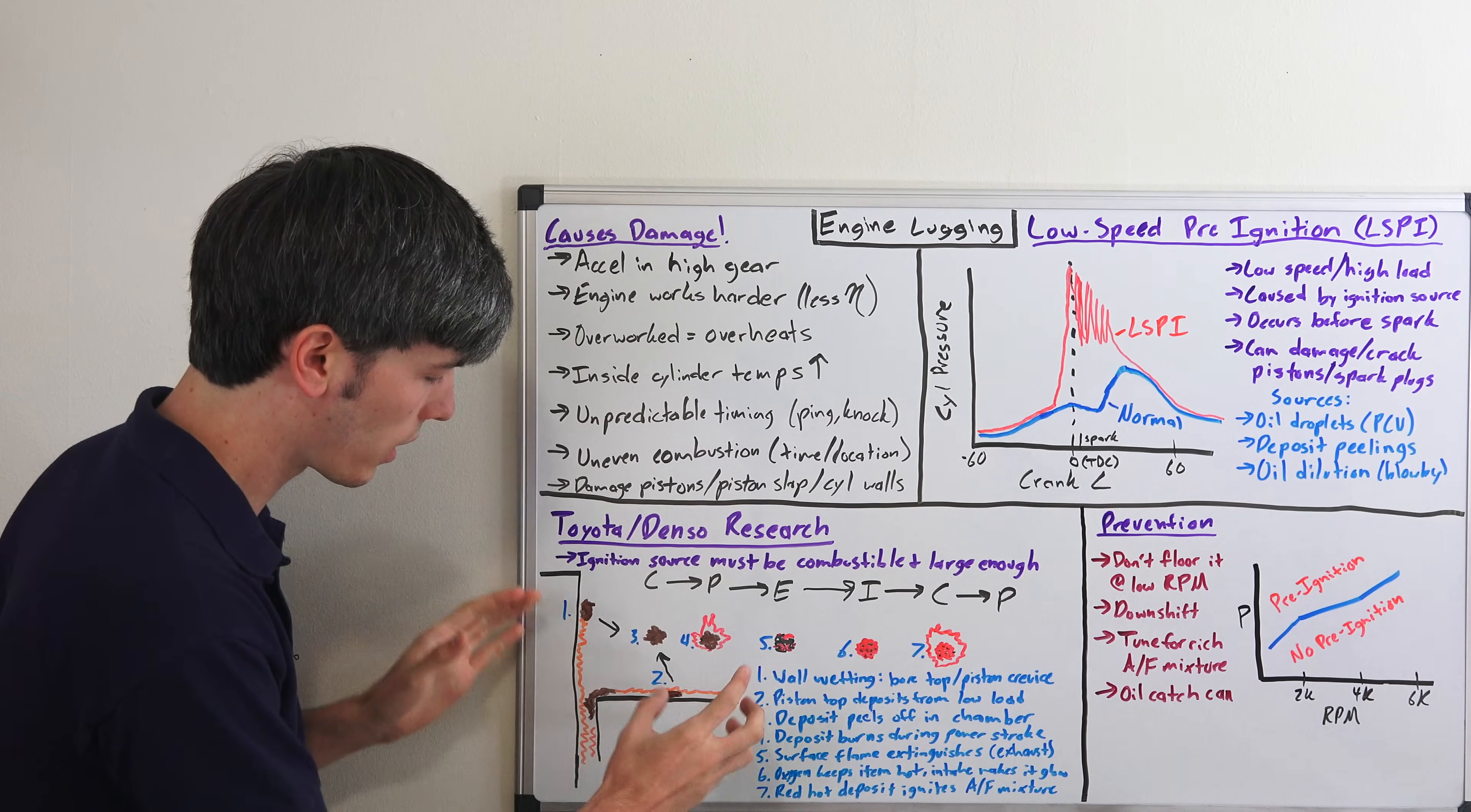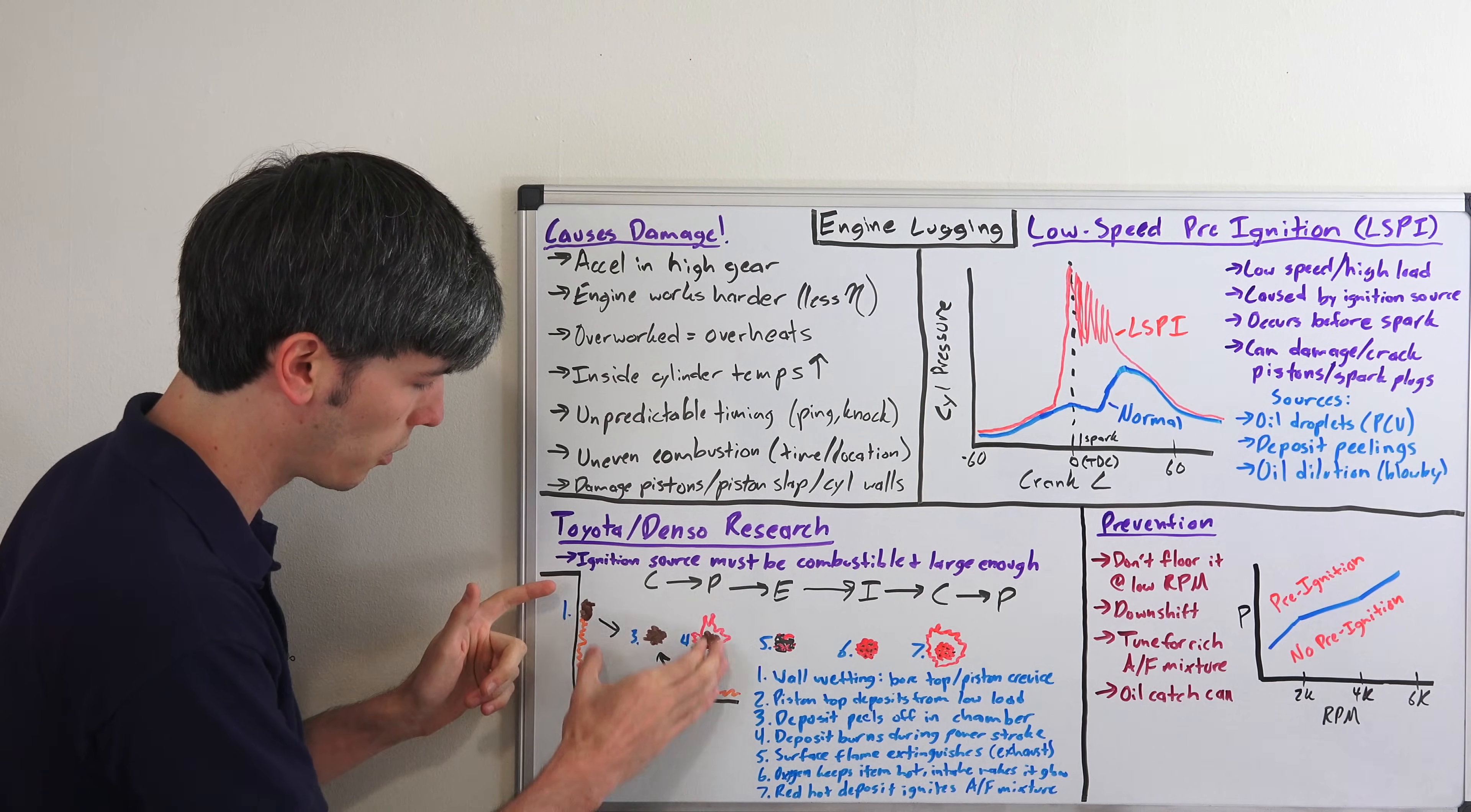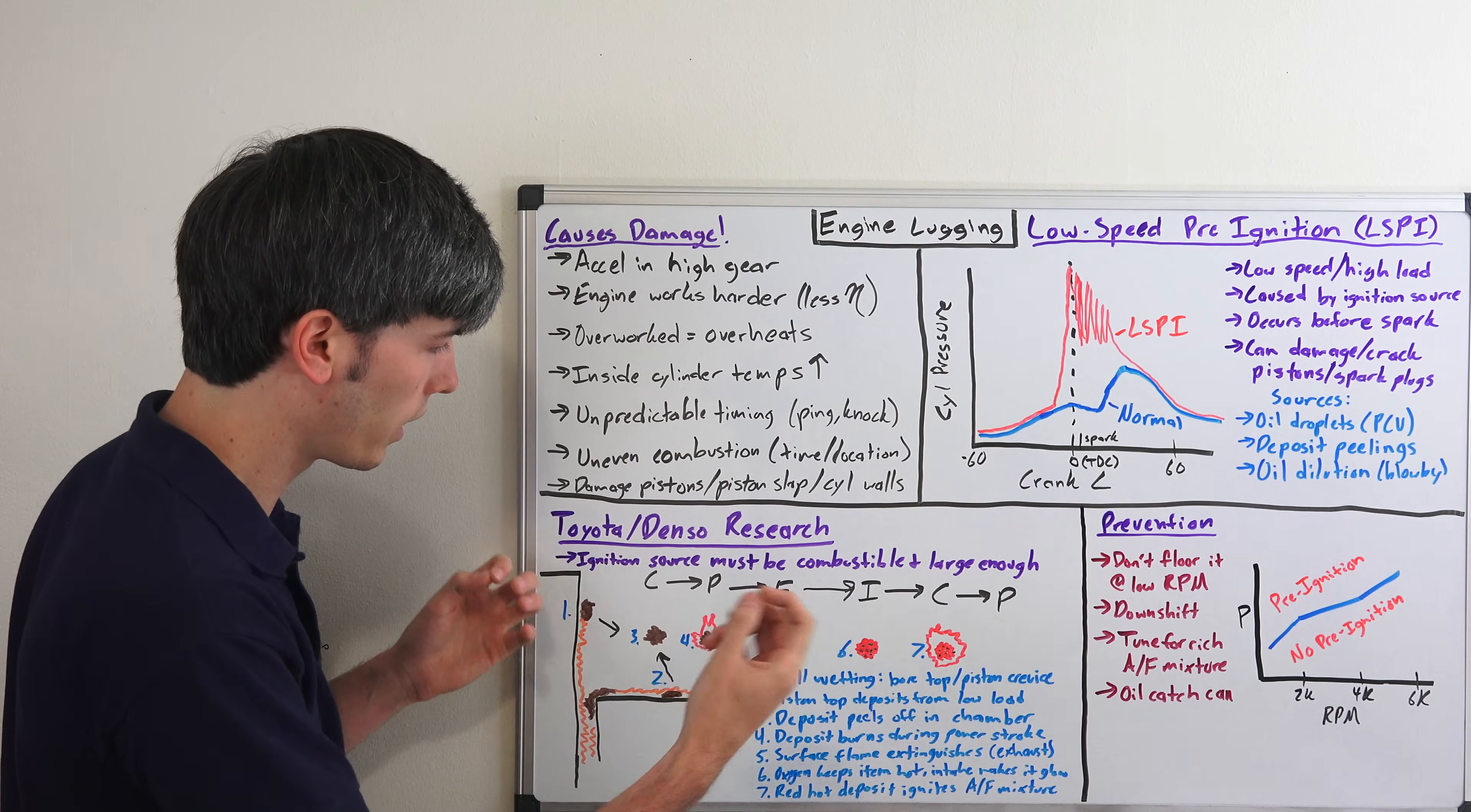Here we have a piston. We're looking at a zoomed in view - this is the cylinder wall and this is our piston which would be moving up and down. We've got deposits that have started to form on the cylinder wall and on the piston from wall wetting,